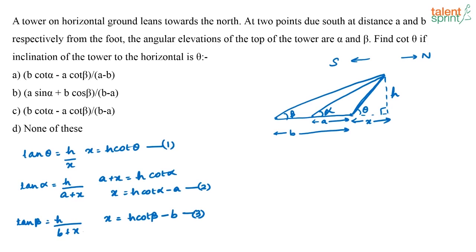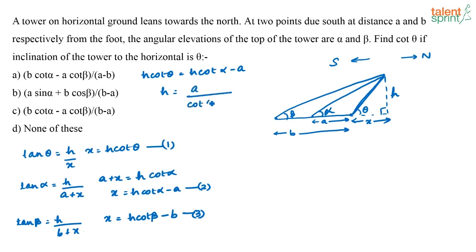Equating equation 1 and equation 2: h·cot theta = h·cot alpha − a. Bringing all h terms to one side: h(cot theta − cot alpha) = −a, so h = −a/(cot theta − cot alpha), which gives h = a/(cot alpha − cot theta). This is equation 4.